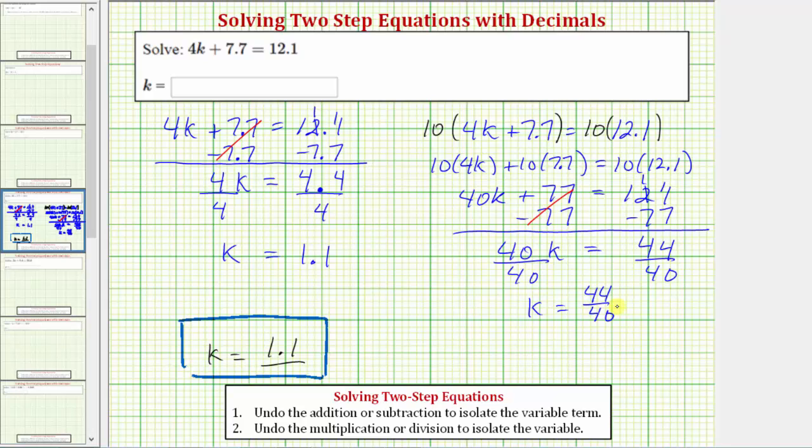If we express the solution as a fraction, we need the fraction to be in simplest form. The greatest common factor between 44 and 40 is 4. So to simplify, we divide the numerator and denominator by 4. 44 divided by 4 is 11. 40 divided by 4 is 10. So as a fraction, the solution is k equals 11 tenths, which equals 1 and 1 tenth. As a decimal is 1.1.